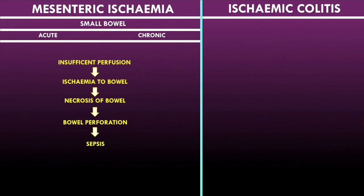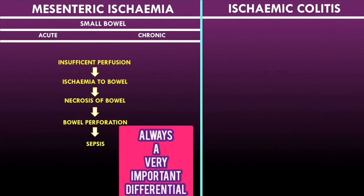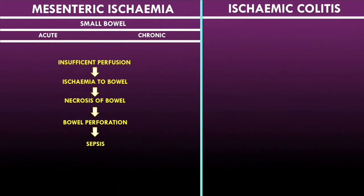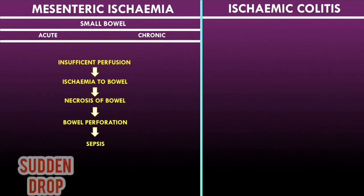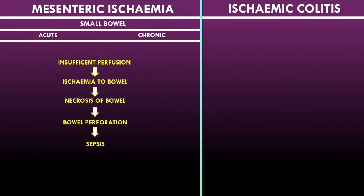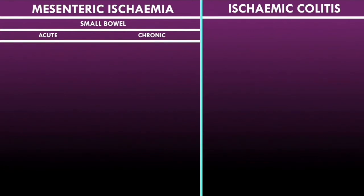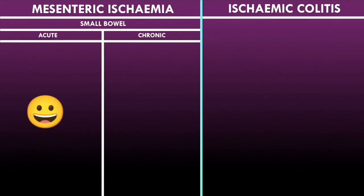This is why mesenteric ischemia is always a very important differential to consider when evaluating a patient with an acute abdomen. The risk of these complications is much higher for acute mesenteric ischemia compared to chronic, because with acute mesenteric ischemia there is a very sudden drop in perfusion to the small bowel, carrying a much higher risk of progressing to bowel perforation.